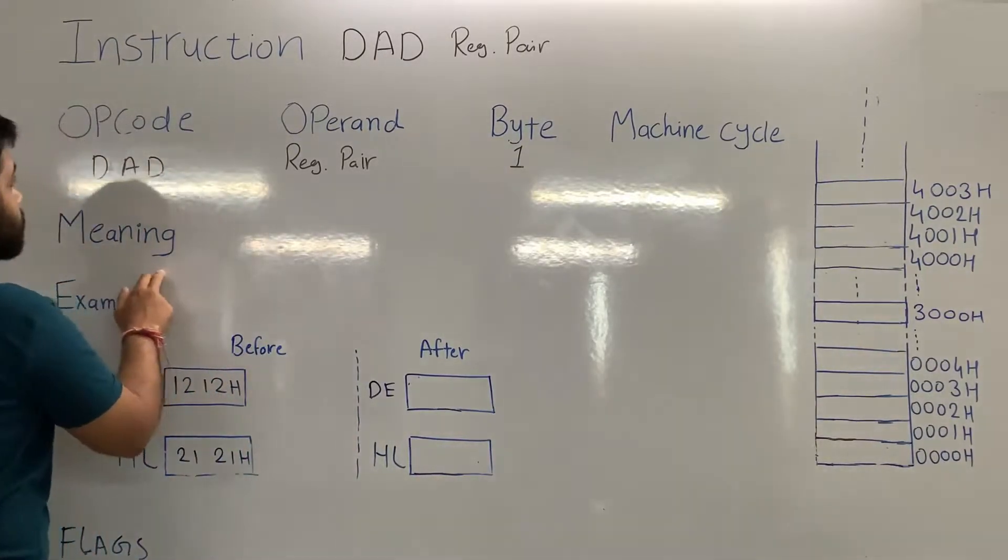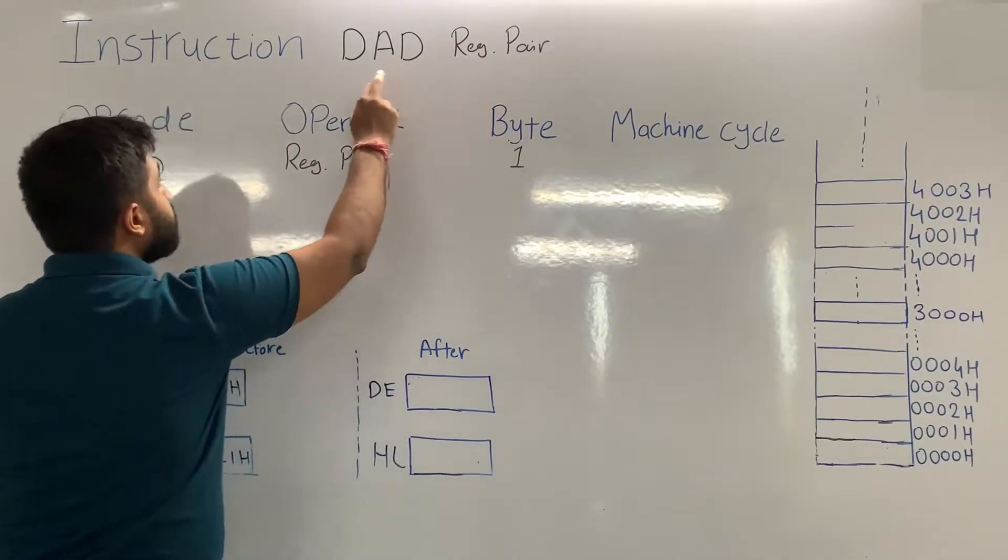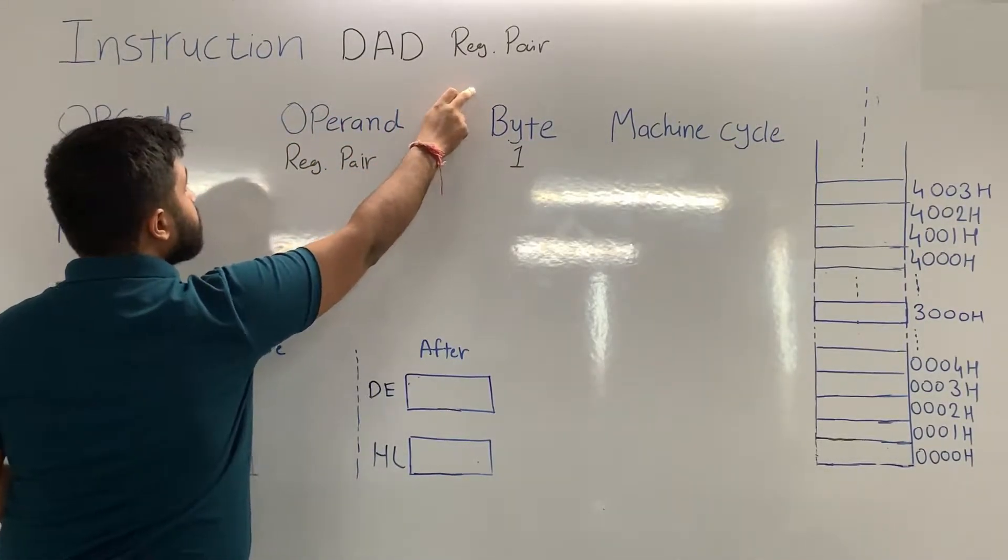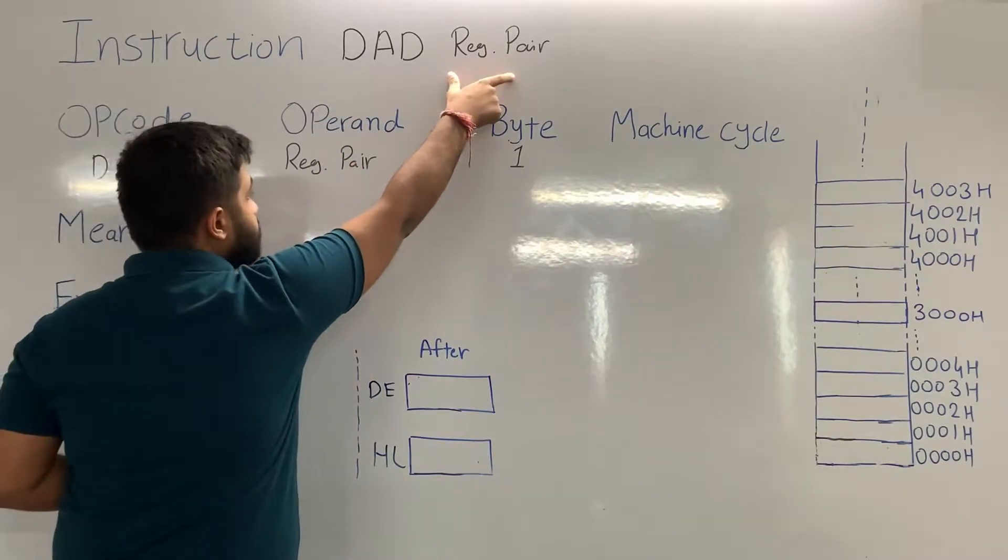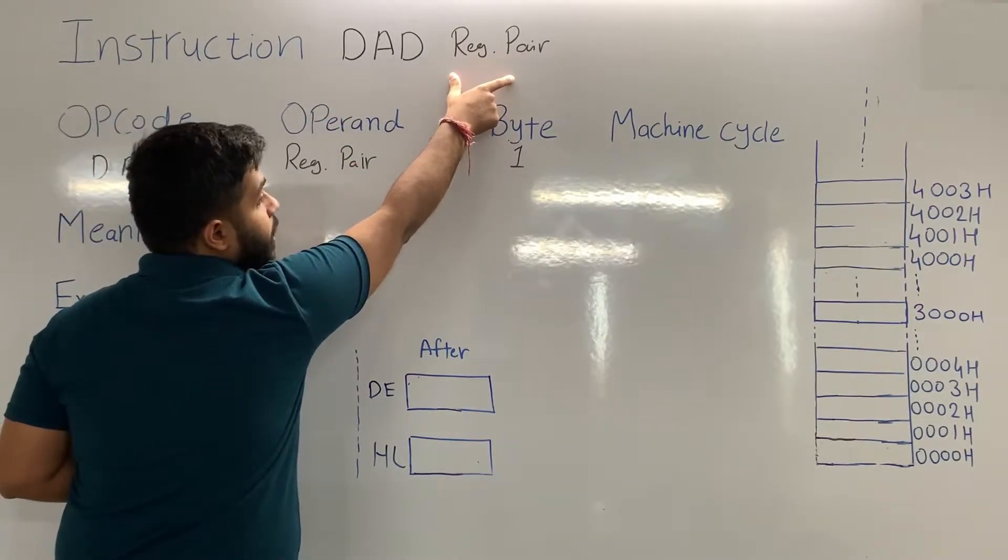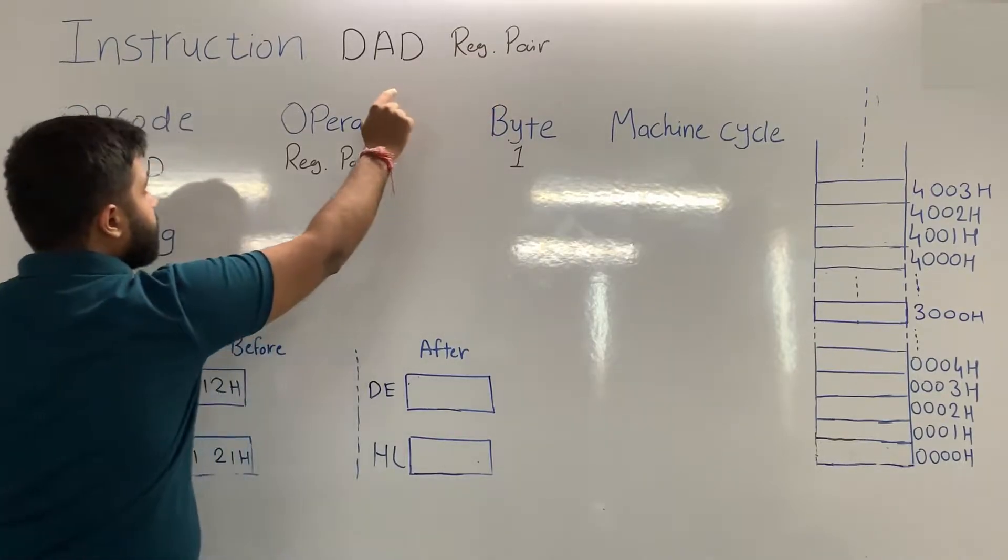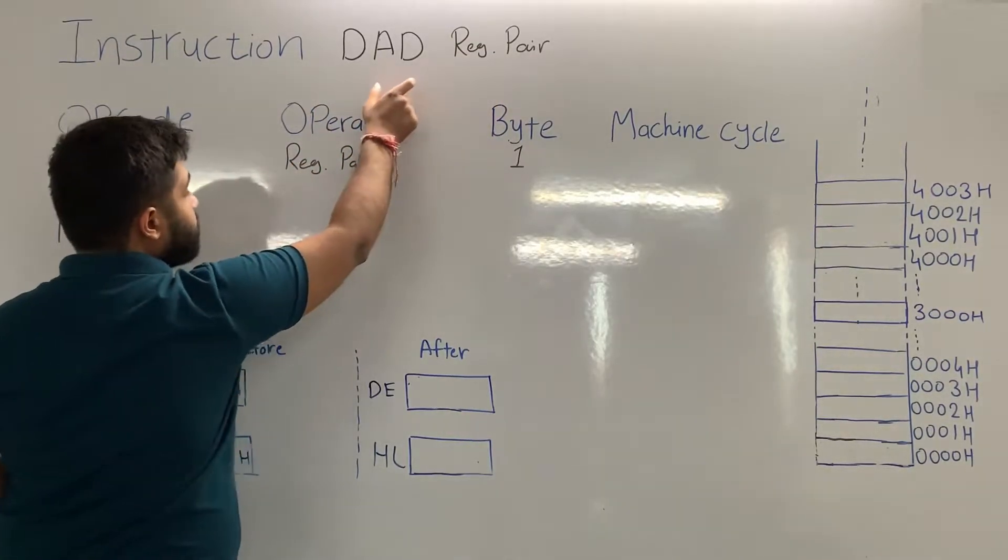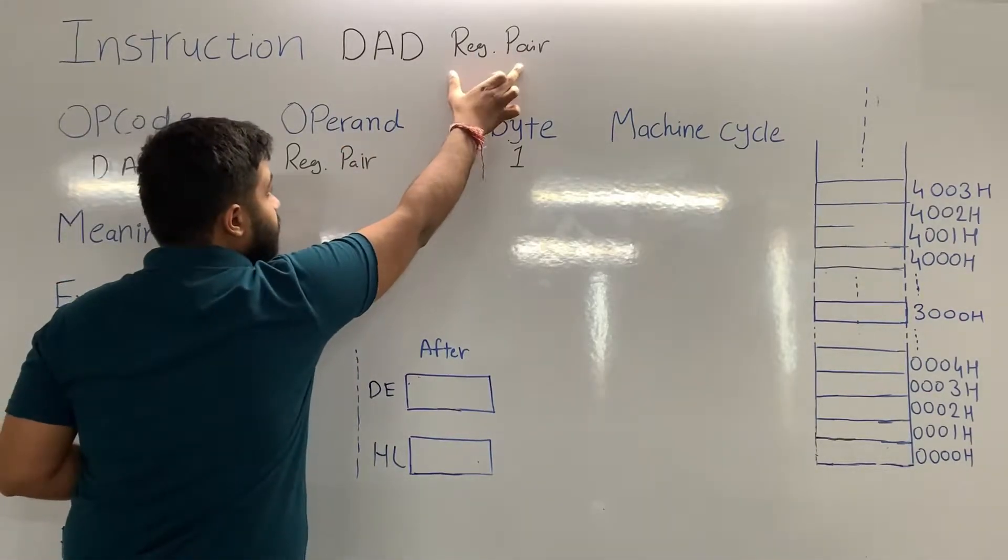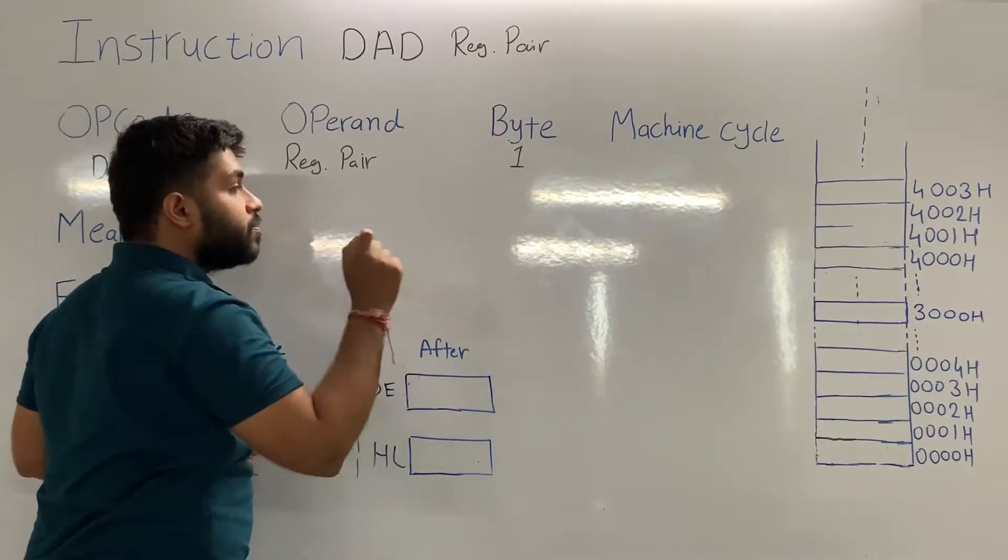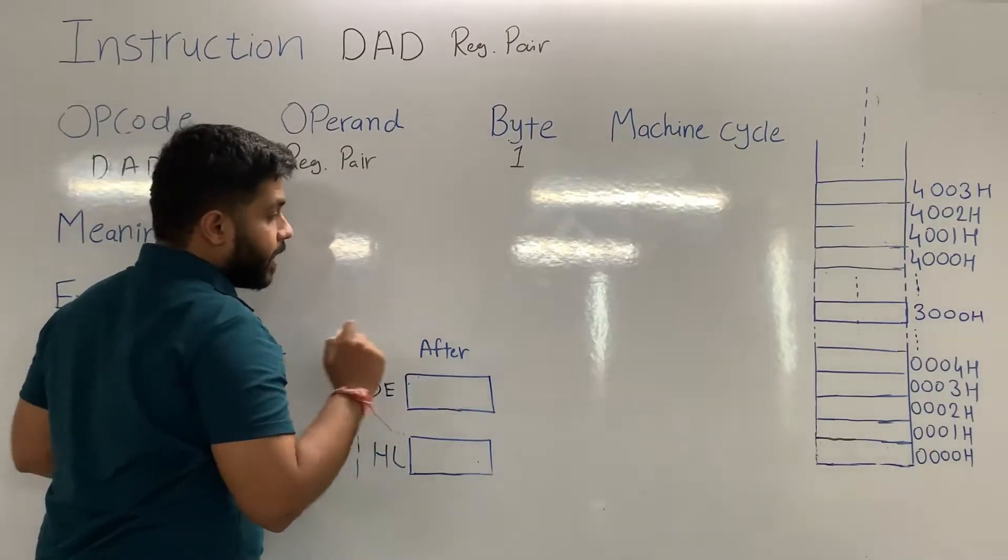Now let's see the meaning of instruction. DAD register pair, it means 16-bit addition of register pair and HL pair. I am repeating, DAD register pair, it means 16-bit addition of register pair and HL pair. The answer will be stored in the HL pair.